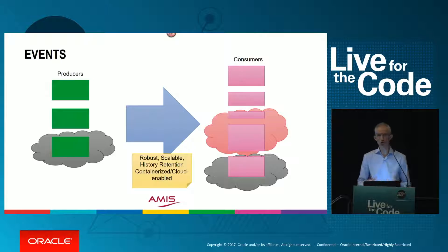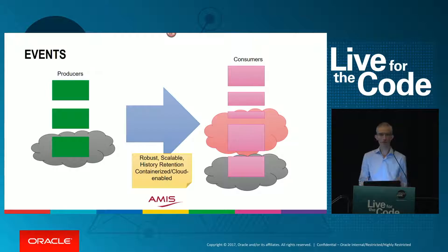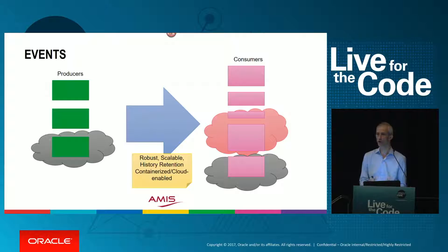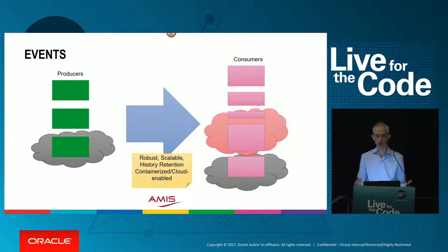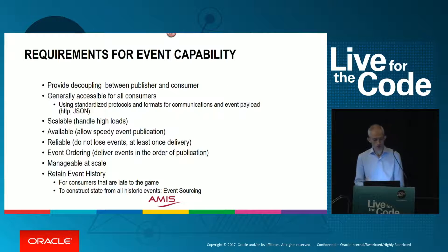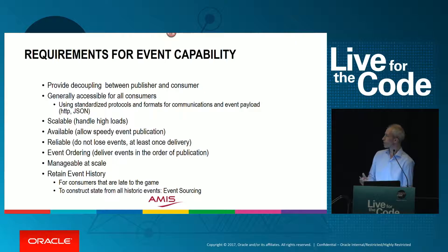Consumers may work in tandems or in clusters — multiple instances of the same consumer performing a task — because the scale is too big for just a single consumer. We want to be able to parallelize and scale. Here are a number of requirements; I think they're fairly obvious.